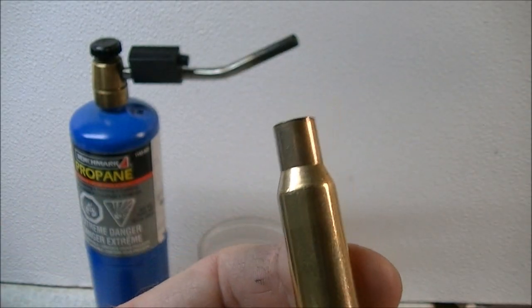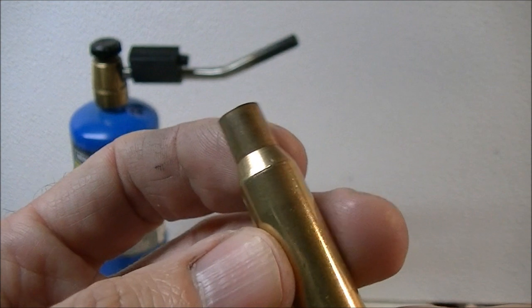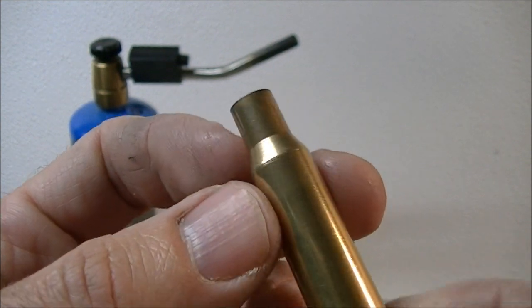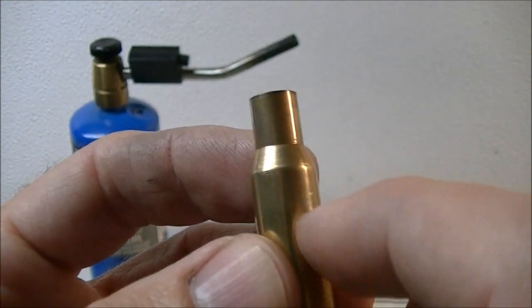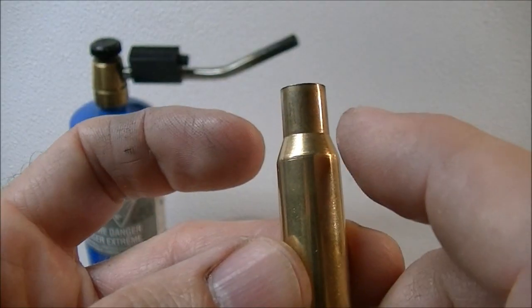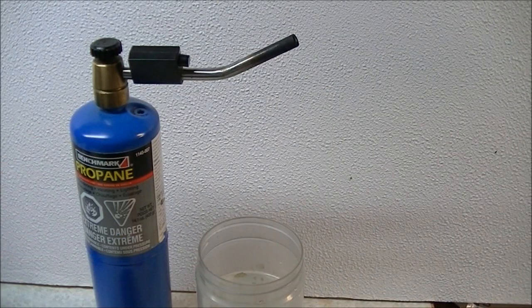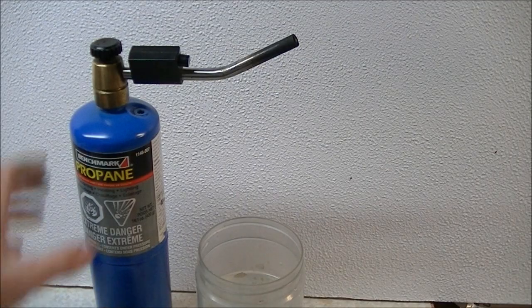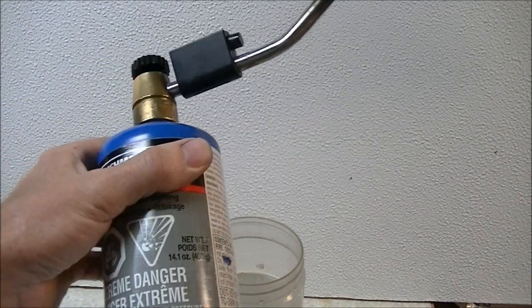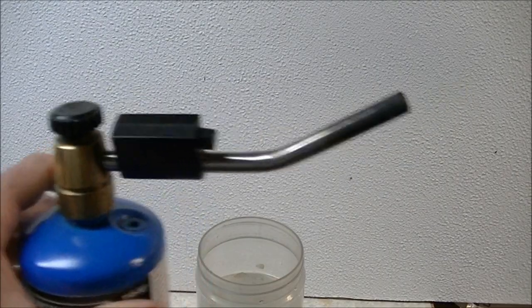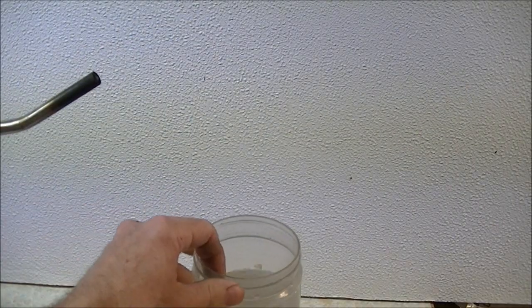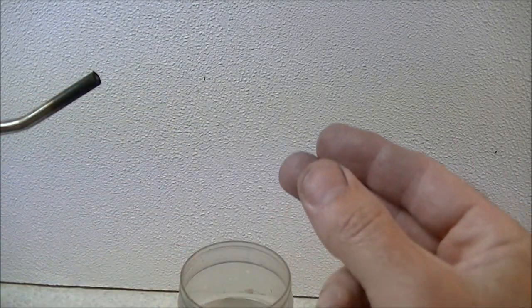Ideally we don't want to actually anneal the brass. What we want to do is just heat treat it or stress relieve the built-up stresses that are in the brass from firing and sizing. The method that I use doesn't involve anything other than just a simple torch, a propane powered torch, a container of water, and your fingers.